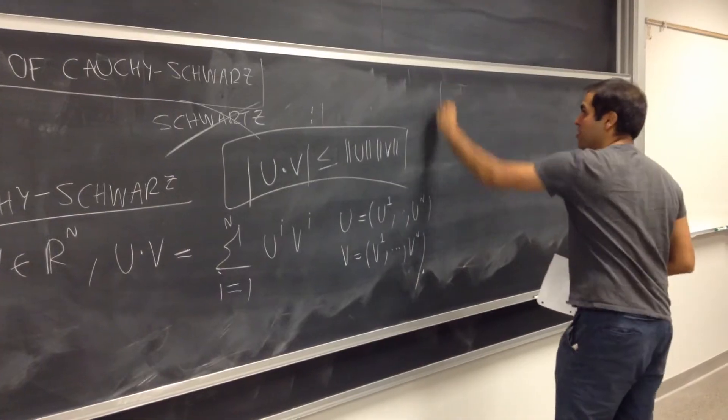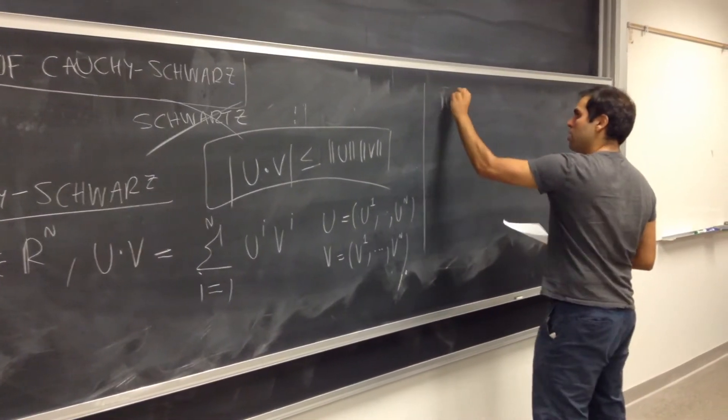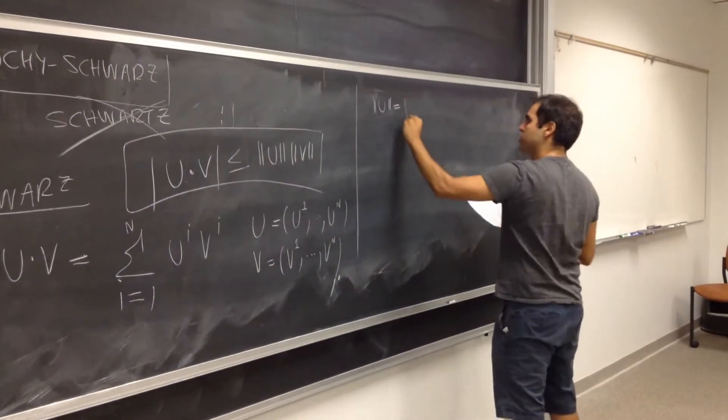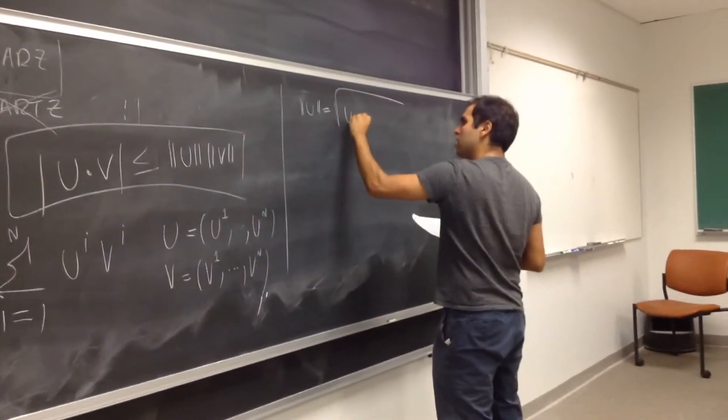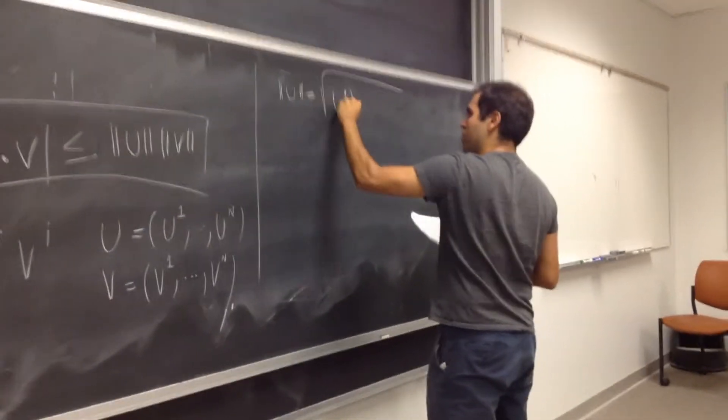and the length is just the square root, let's say length of u is the square root of the sum of squares of the components.